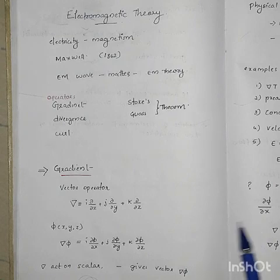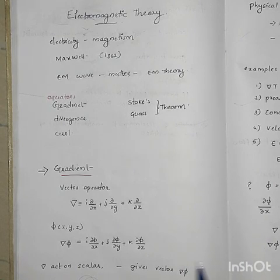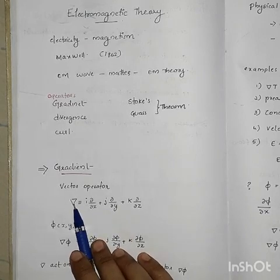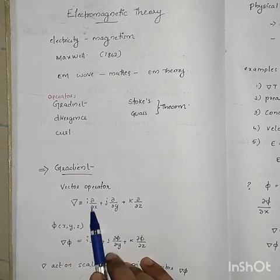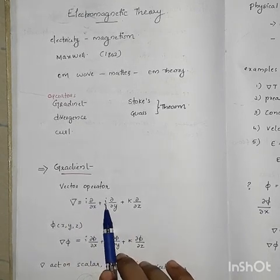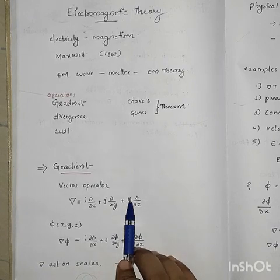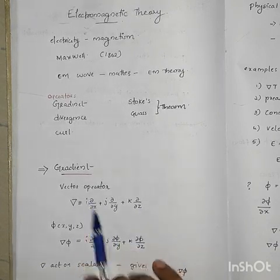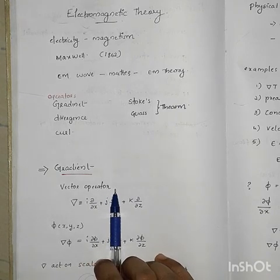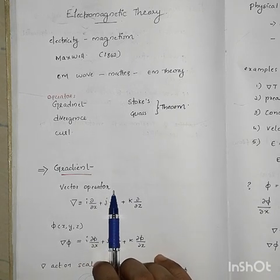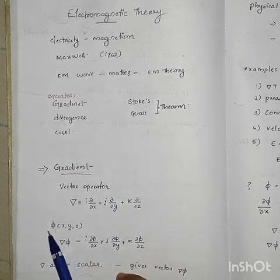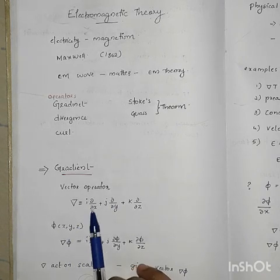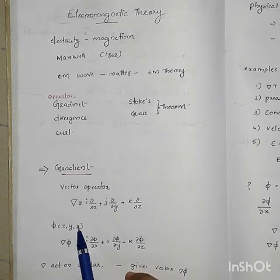First one is gradient. A vector operator defined by del equal to i ∂/∂x plus j ∂/∂y plus k ∂/∂z. Here the operator is a gradient operator. Phi is a scalar function of x, y, z.